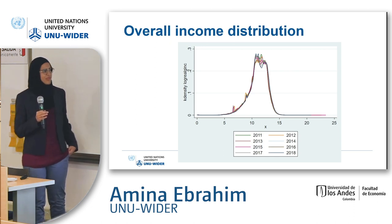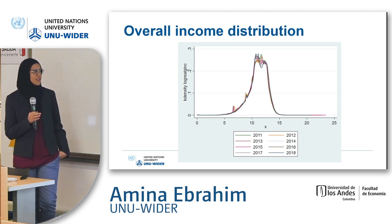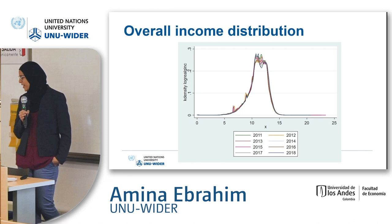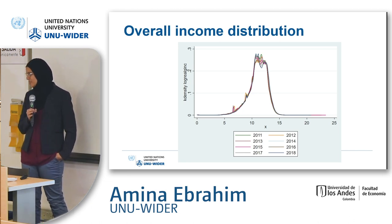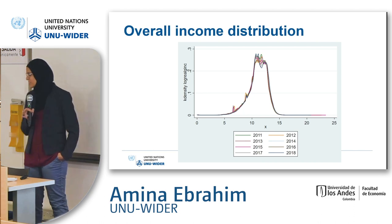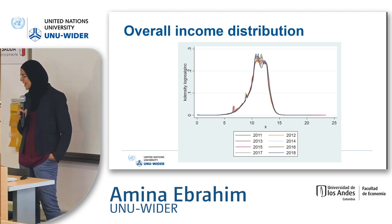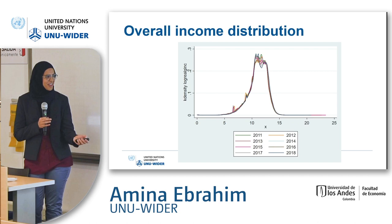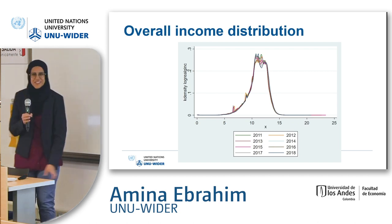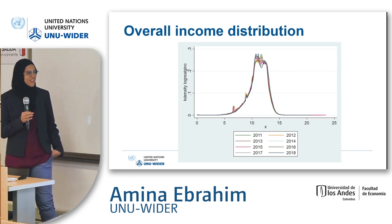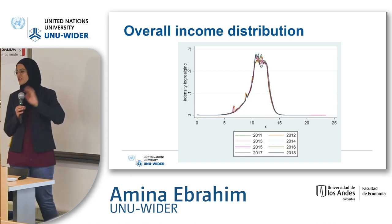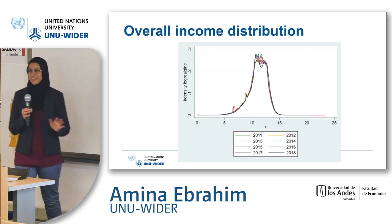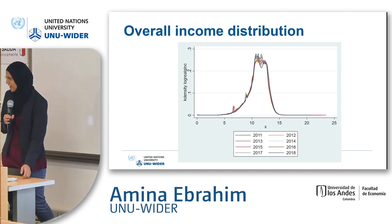This is our overall income distribution — a kernel density graph for the panel period — showing real gross income for each tax year. You can see a slight shift in the distribution to the right over time. There are some small peaks we still need to investigate: we know they're not driven by business income, which we tried to remove last week, but they might reflect round-number bunching or kinks in the tax schedule.